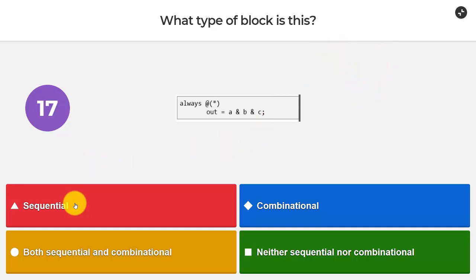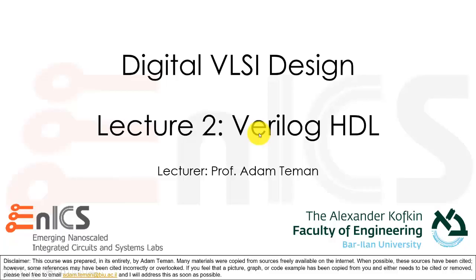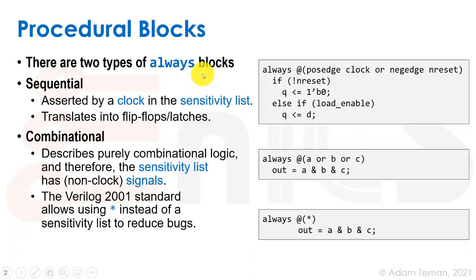It's a combinational block, and let me remind you why. As we saw in the lecture, there are two types of always blocks: a sequential always block and a combinational always block. A sequential always block has a sensitivity to the clock — in its sensitivity list we have a clock.